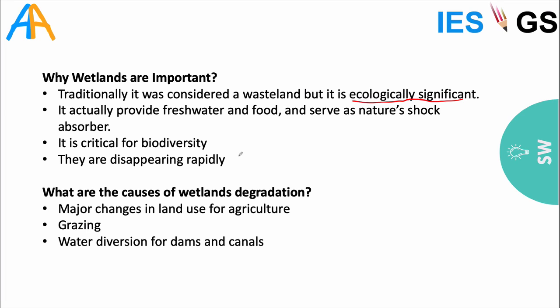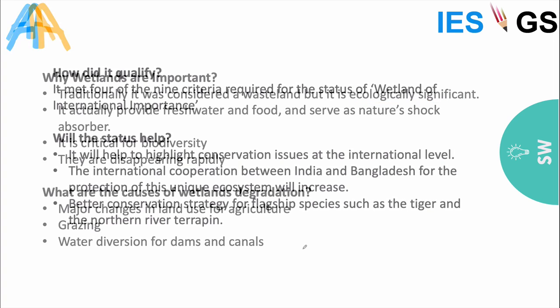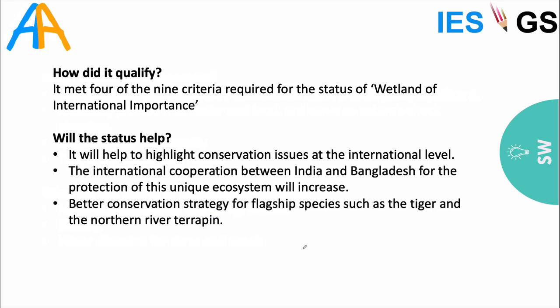Major causes of wetland degradation include changes in land use — conversion to agriculture, grazing, construction, and diversion of rivers through canals or dams. When rivers are diverted or blocked by dams, deltas don't receive sediments and slowly reduce in size, losing land to the sea. To qualify as a Ramsar site, there are nine criteria; Sundarbans met four of them.